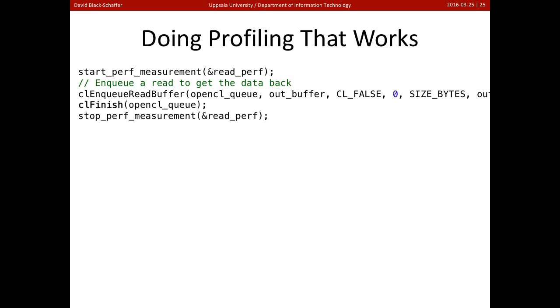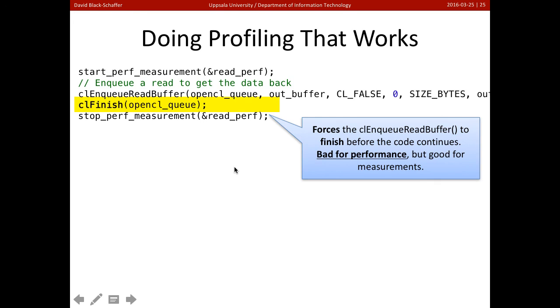So let's do profiling that works. What are we going to do here? We've got our enqueue read buffer. We've got our performance measurements around it. We're going to just stick in a CL finish. So that'll force the C program to stop here until the read buffer is done. So now our performance measurement is going to be accurate.